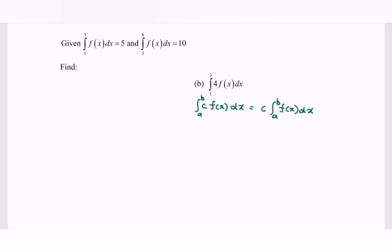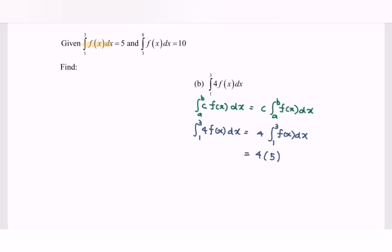Referring to the situation: integrate 4 times f(x) with respect to x for the limits 1 to 3. Making use of the property, we factor out the 4, giving 4 times the integral of f(x) from 1 to 3. Referring to the given information, the integral of f(x) from 1 to 3 equals 5. So 4 multiplied by 5 gives us 20. Therefore the integral of 4f(x) from 1 to 3 equals 20.